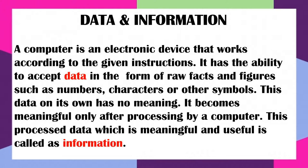Computer has the ability to accept data. You can give any form of data to the computer — it can be numbers, symbols, or characters. But remember one thing: this data has no meaning. When this data is processed in the CPU — because the CPU is the brain of the computer — then it is known as information. When the data is processed, we call it information.